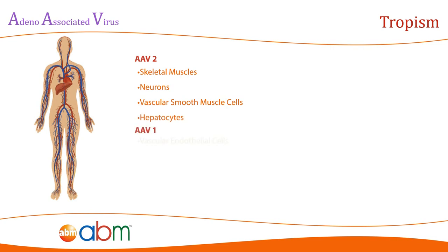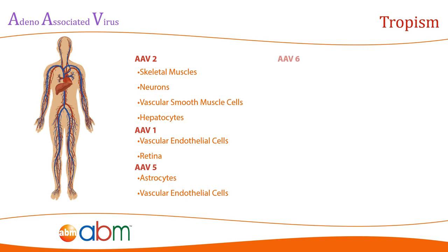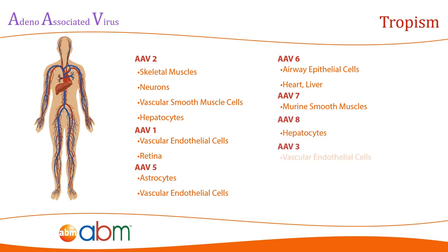Other AAV serotypes have also been found to be excellent gene vectors for various tissue types. AAV1 excels in gene delivery to vascular endothelial cells as well as the retina, heart, and lung. AAV5 also exhibits tropism towards vascular endothelial cells but is more importantly efficient in transducing astrocytes. AAV6 excels in transducing airway epithelial cells and hepatocytes, while AAV7 excels in transducing murine smooth muscle cells, similar to AAV1 and AAV5. Both AAV8 and AAV3 show natural tropism towards hepatocytes, and AAV4 has shown tropism towards both kidney and heart cells.